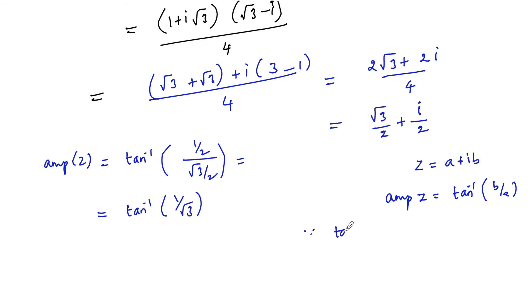Since we know that tan pi by 6, that is tan 30 degrees, is equal to 1 by root 3, we can write pi by 6 is nothing but tan inverse of 1 by root 3.